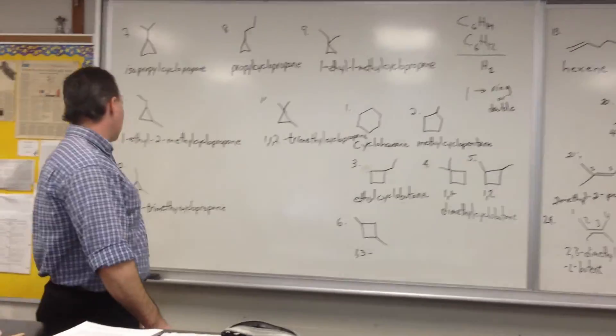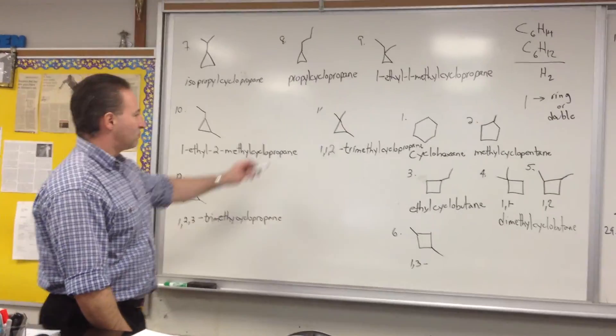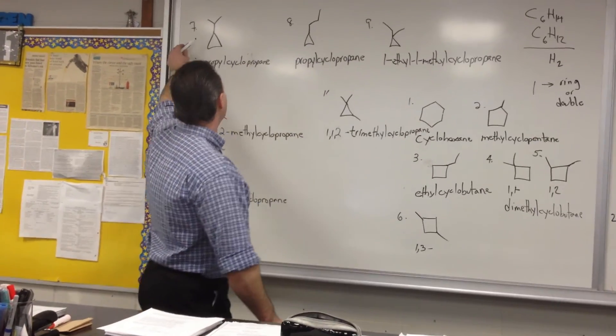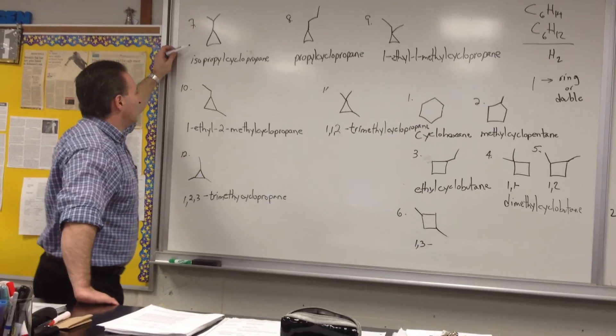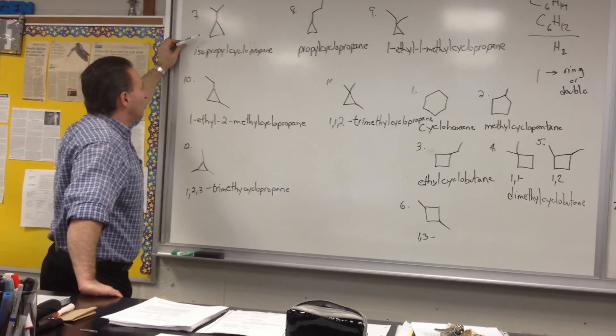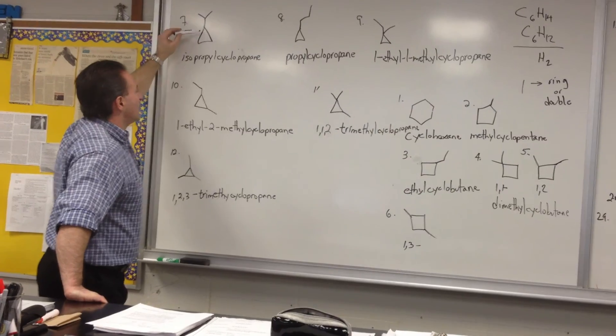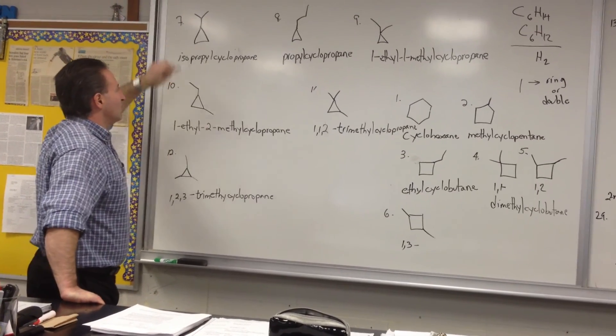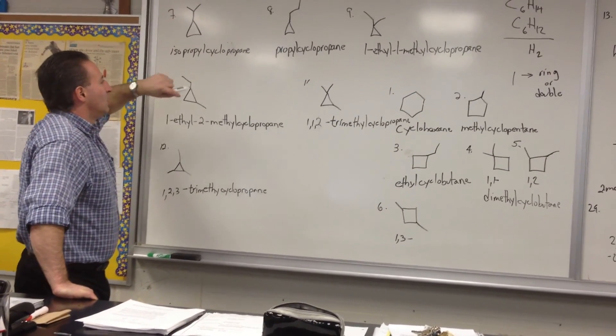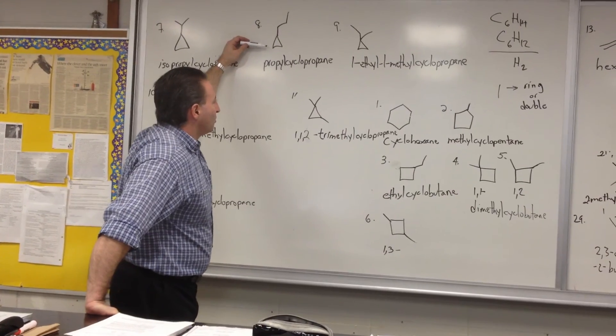Then the seventh possibility involves cyclopropanes. We started that over here. So we did isopropylcyclopropane. Isopropyl has 3 carbons in it. The cyclopropane ring has 3 carbons in it. So that's a total of 6 carbons.